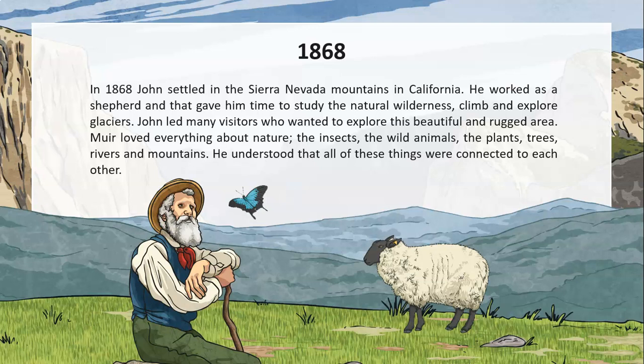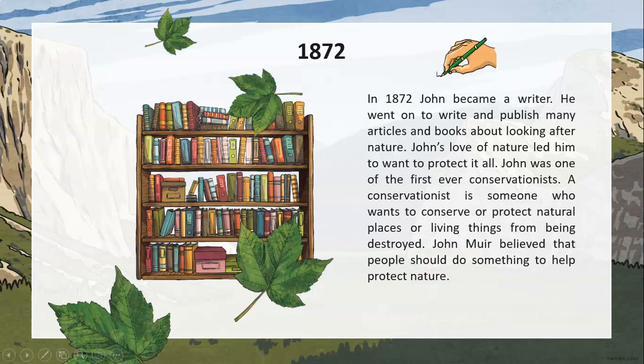John led many visitors who wanted to explore this beautiful and rugged area. Muir loved everything about nature — the insects, the wild animals, the plants, trees, rivers, and mountains. He understood that all of these things were connected to each other. In 1872, John became a writer. He went on to write and publish many articles and books about looking after nature. John's love of nature led him to want to protect it all, and he was one of the first ever conservationists — someone who wants to conserve or protect natural places or living things from being destroyed.